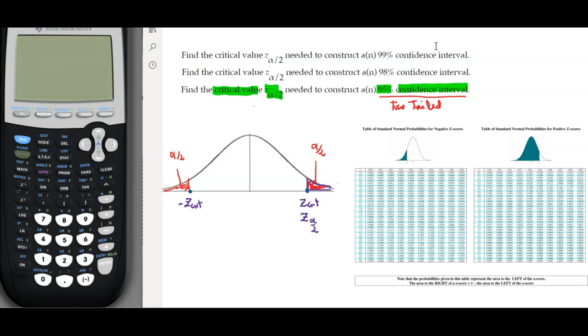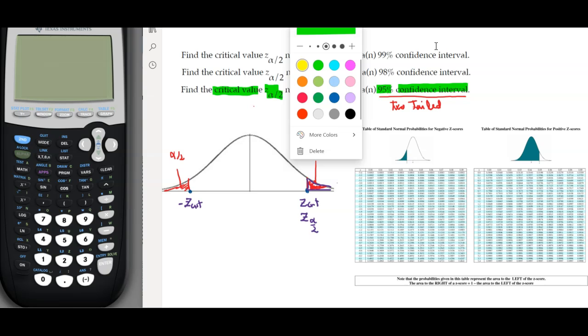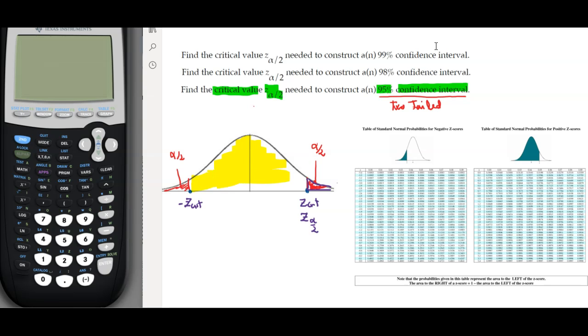What happens is we know the confidence interval but we don't know the alpha, and our job is to figure out what is the alpha. Let me draw the confidence interval. The 95 percent is going to be the yellow area, and that is represented by 0.95.